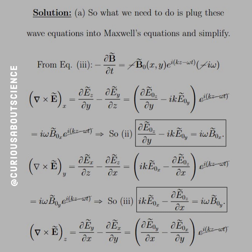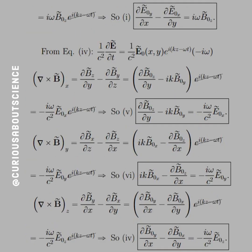It's a matter of working through which terms get a factor of i·k versus which stay as partials. Matching coordinates: the x-component goes to B-naught-x, y goes to B-naught-y, and z goes to B-naught-z. From Ampere-Maxwell (equation four), we take the time derivative of E, the exponentials cancel when taking the curl of B, and the curl x-component matches Ex, curl y matches Ey, and curl z matches Ez.